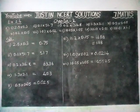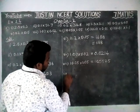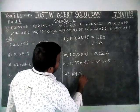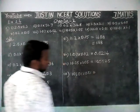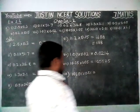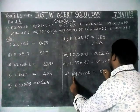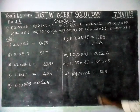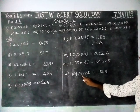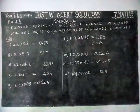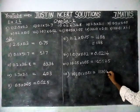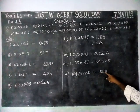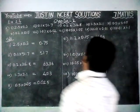9th question: 101.01 into 0.01 is equal to. We have to multiply with 1. When we multiply by 1, we get the same answer. Now we have to consider the total number of decimal places: 1, 2, 3, 4 digits — totally we need 4 decimal parts. So we move 1, 2, 3, 4. The answer is 1.0101 for the 9th question.